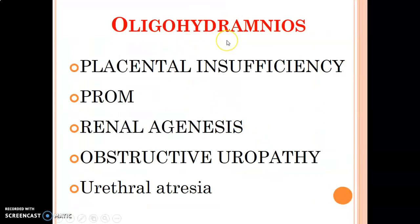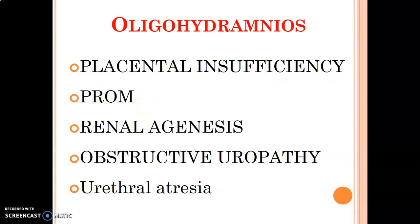Causes of oligohydramnios: when the placenta is not functioning well, less amniotic fluid is produced. Premature rupture of membranes causes the mother to leak fluid before the pregnancy is termed, decreasing the amount and causing oligohydramnios.